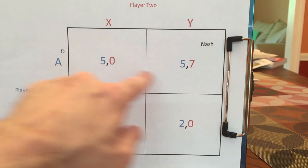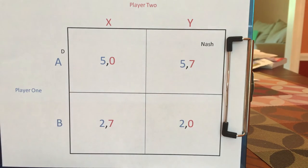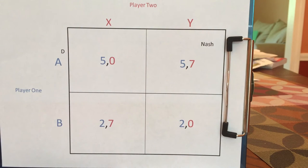Player two would say: if I knew A was going to be played, I would want Y. If I knew B was going to be played, I would want X. This game has one Nash Equilibrium: A, Y.